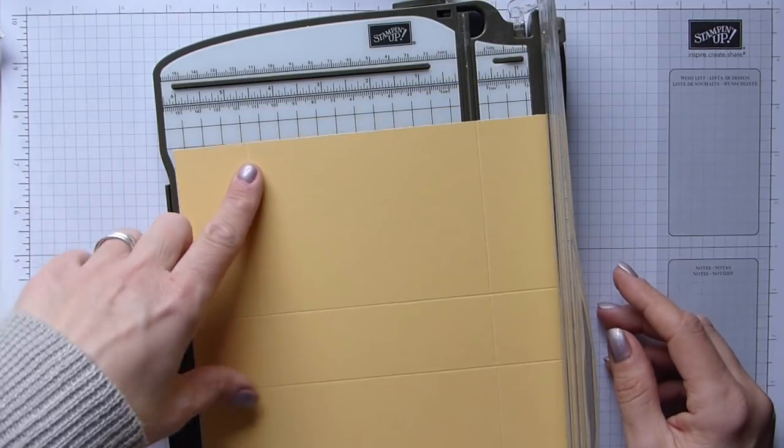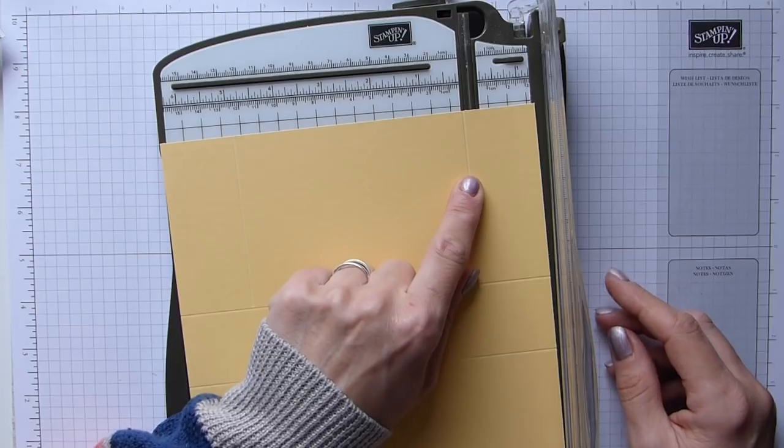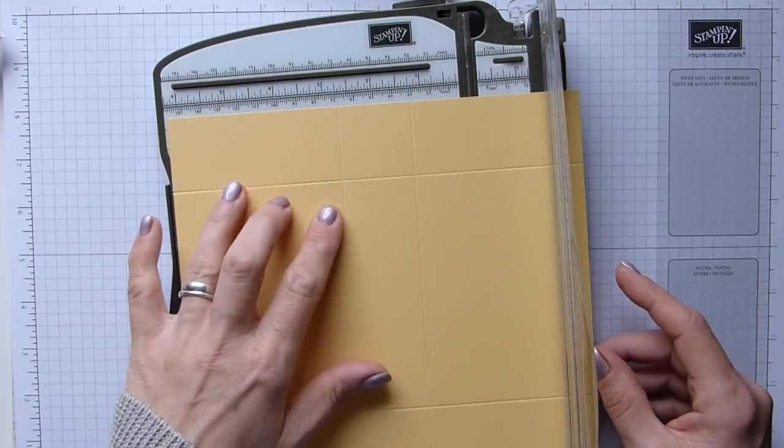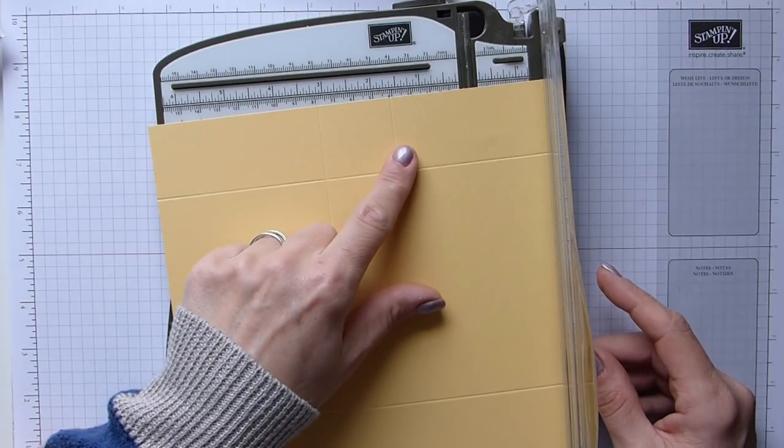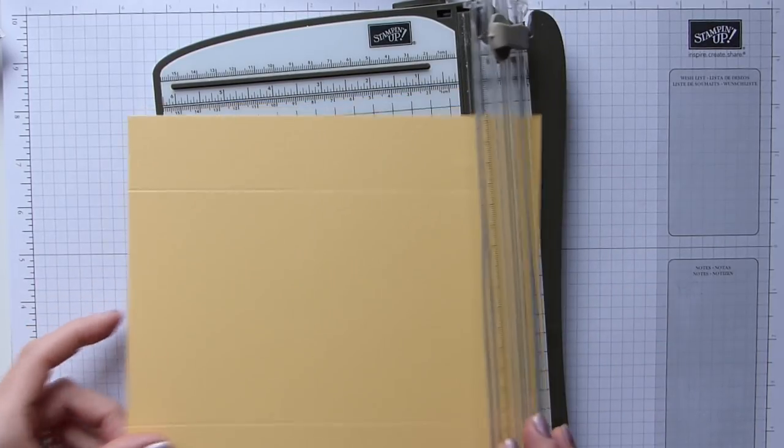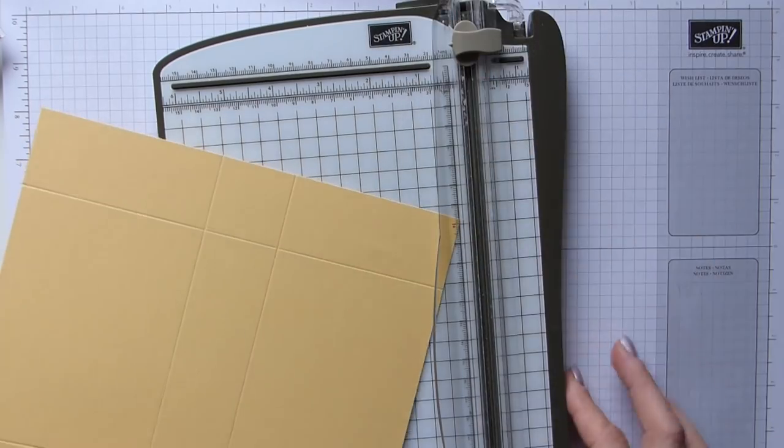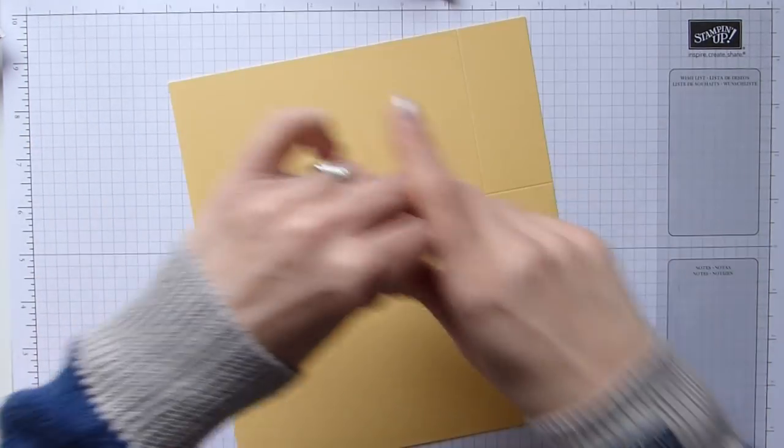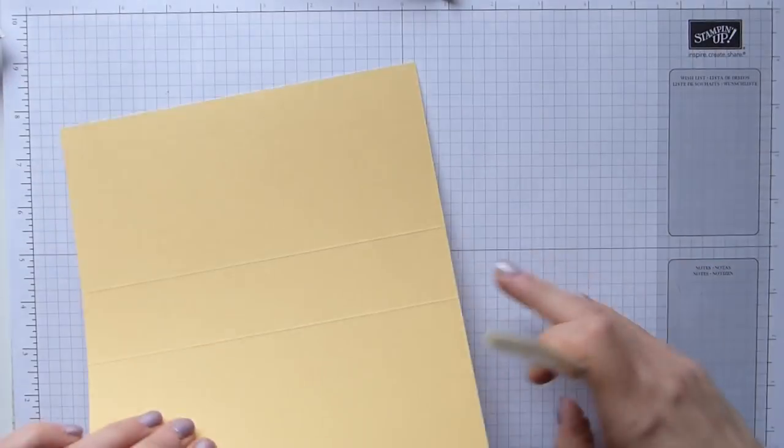So short side, one and a half, six and a quarter, which in centimeters is four and 16. On the long side, we need to score at three and a half and five, which is nine and 13 centimeters. Move that out of the way. Fold and burnish our score lines.